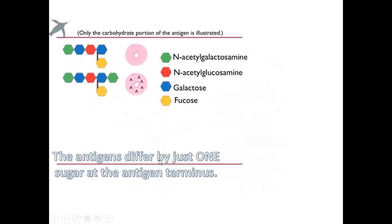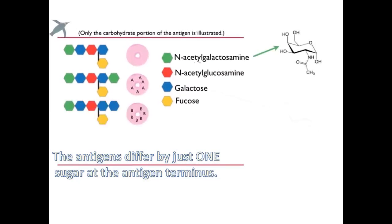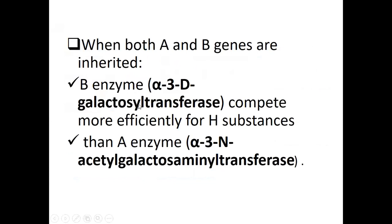The antigens differ by just one sugar at the antigen terminus. What's common to the blood group system is the presence of the H substance and the type 2 precursor. The type 2 precursor comes first, then the H substance is attached, and then a specific immunodominant sugar is attached depending on the gene inherited from your parents. When both A and B genes are inherited, both enzymes are expressed, producing both A and B antigens on the red blood cell surface.